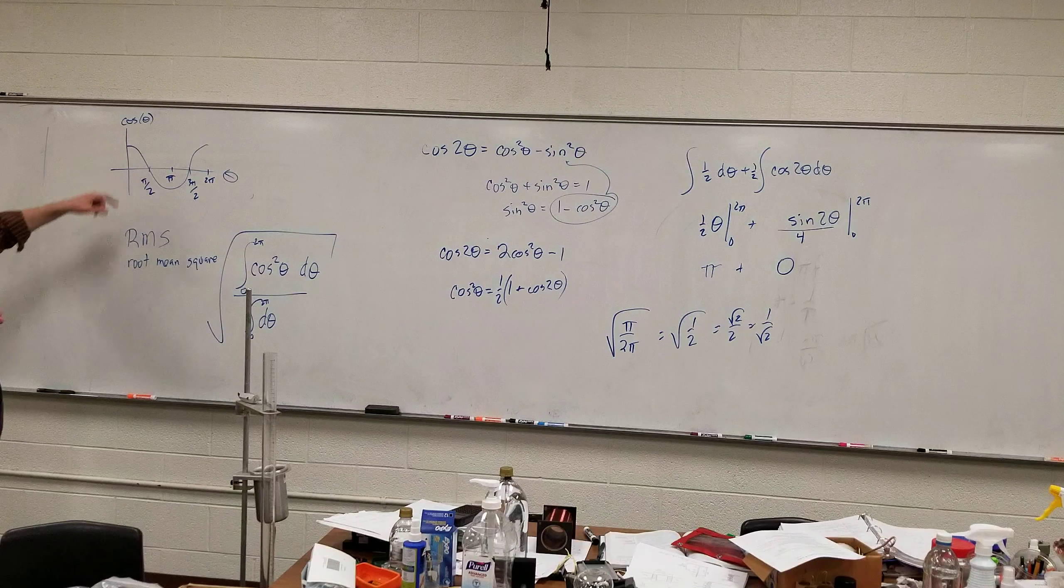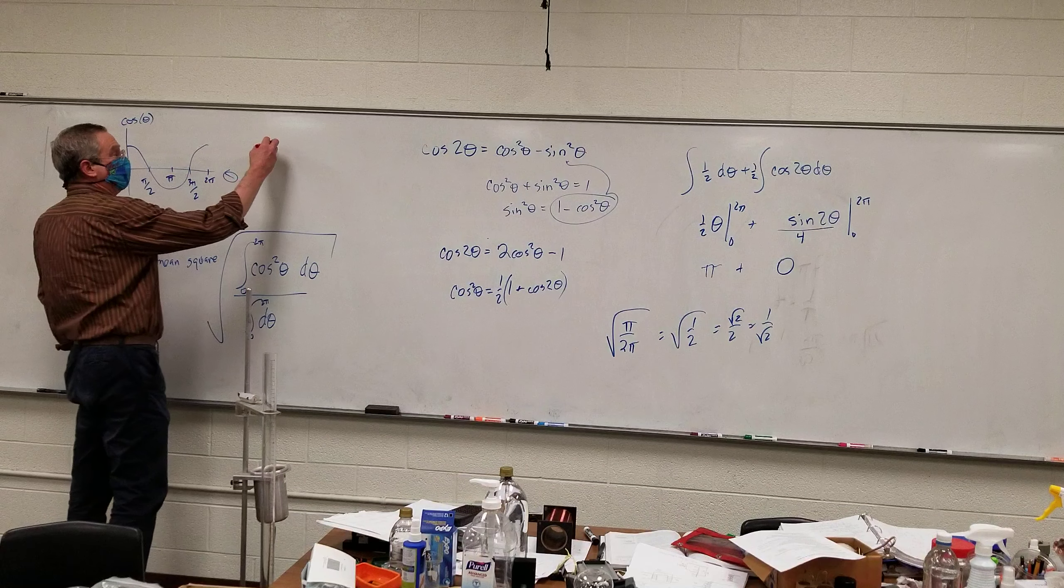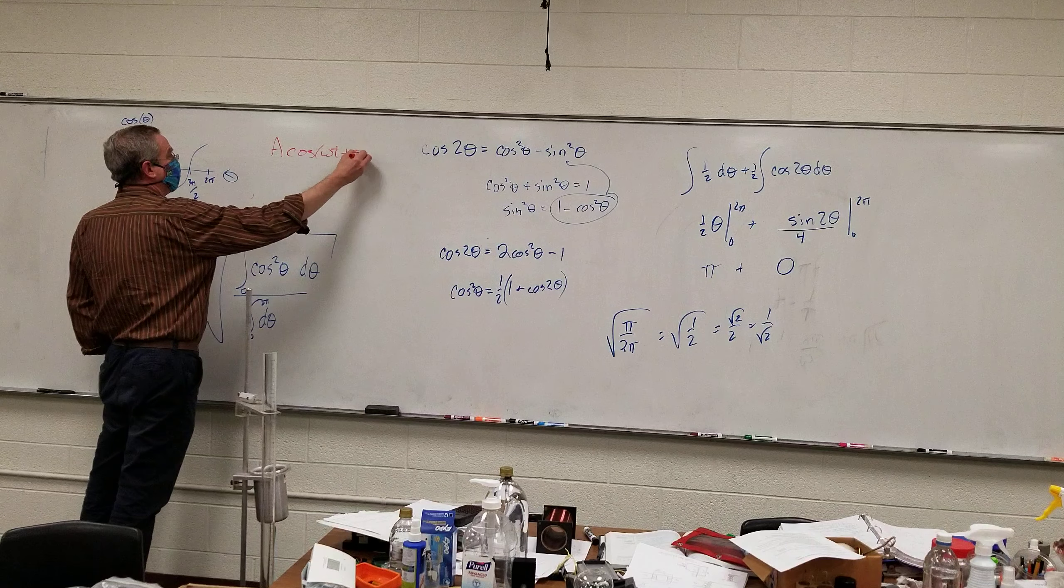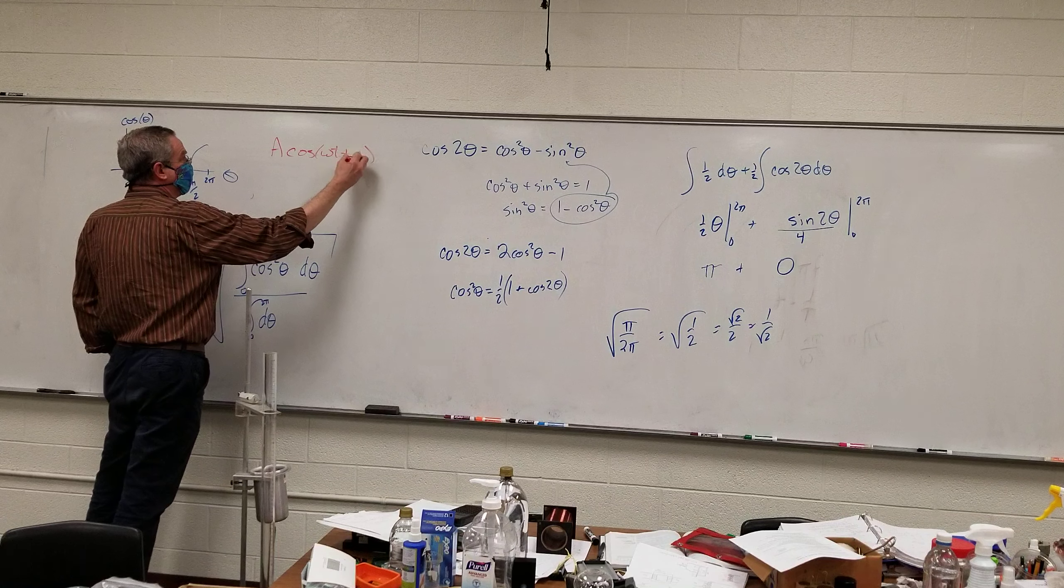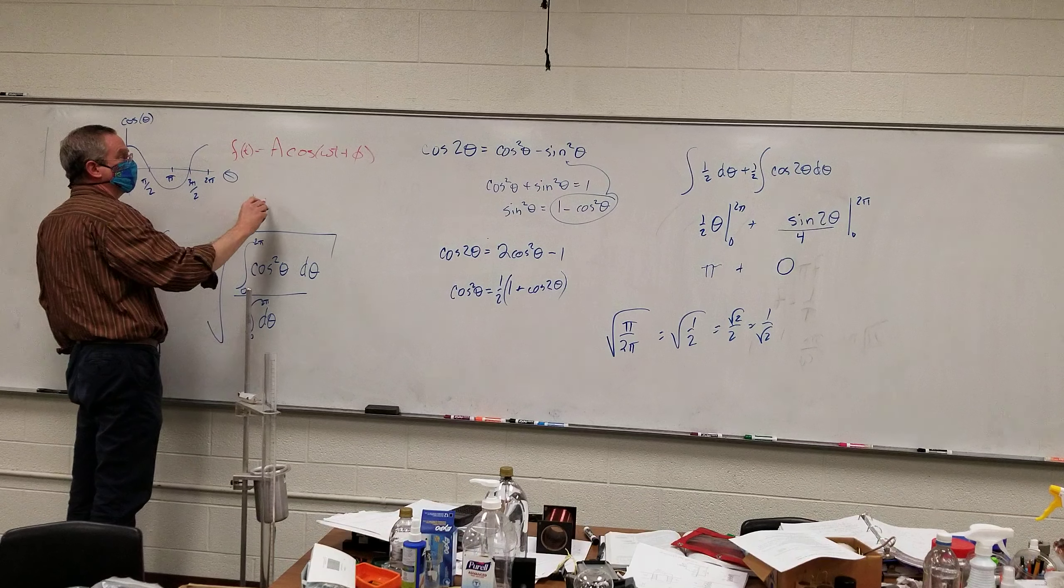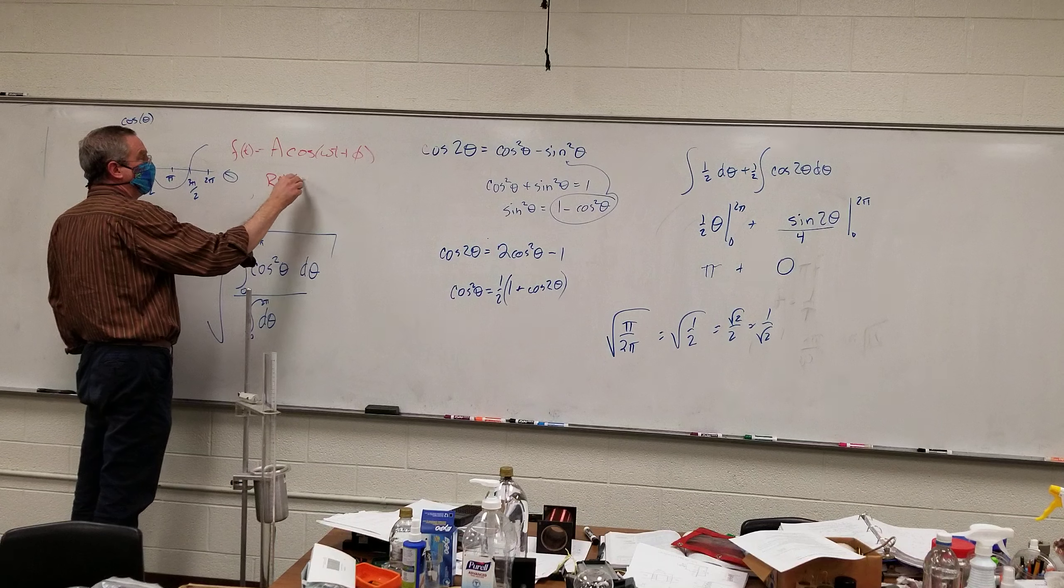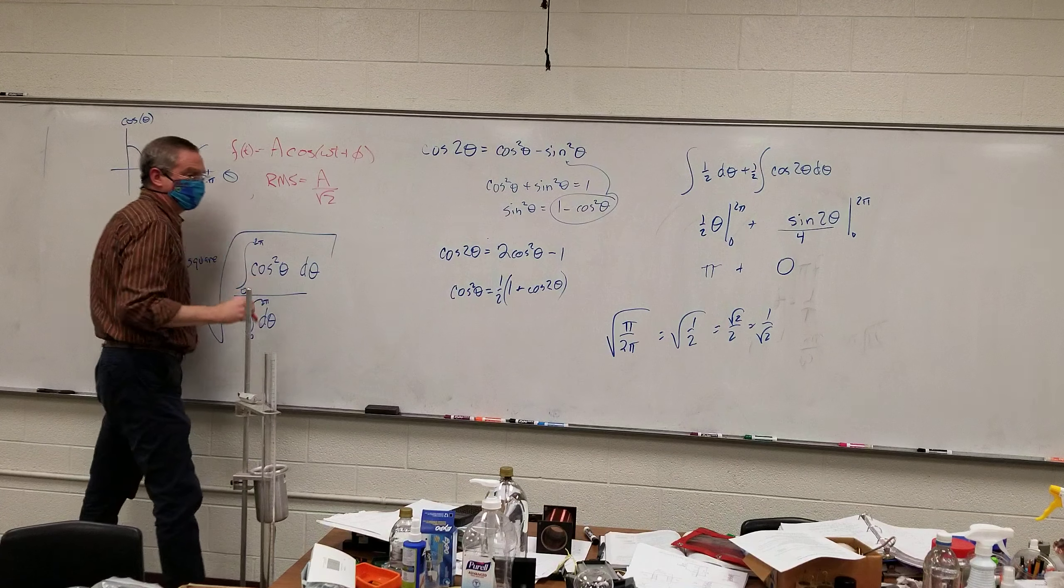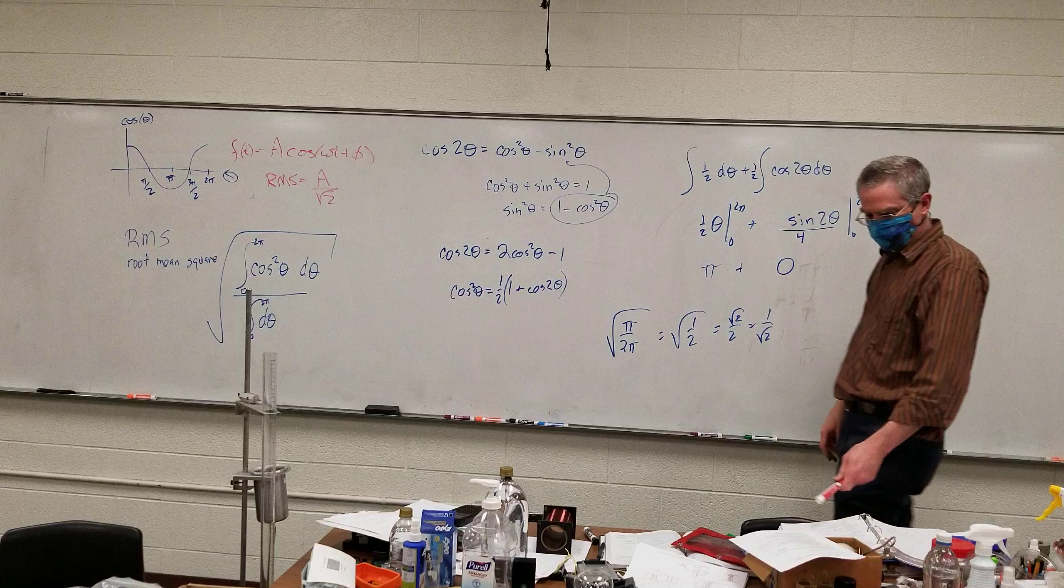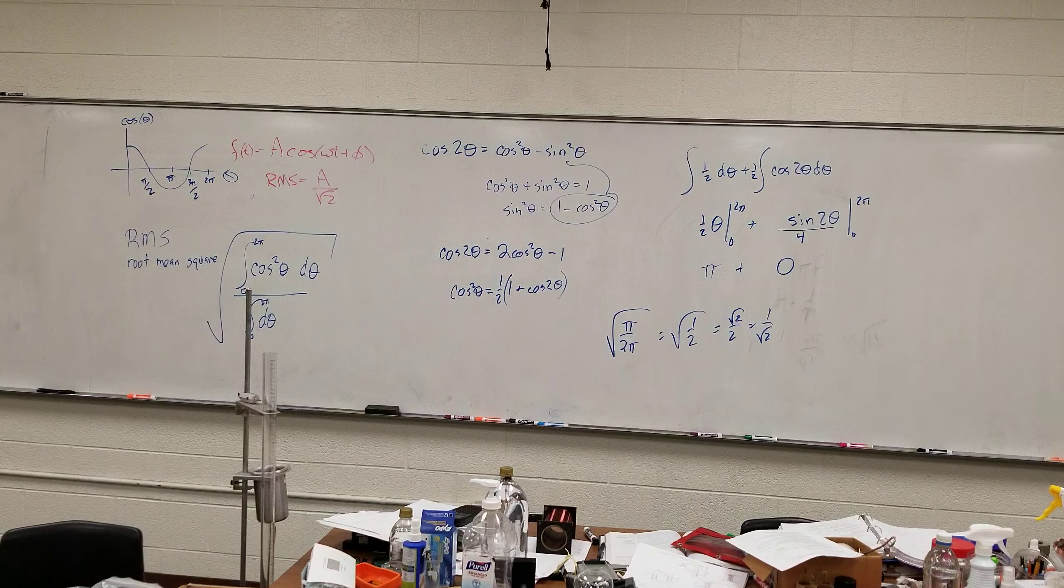In this case, our amplitude is one. If our amplitude were something else, we just stick that in front, we just multiply by it. So if I have some function, A cosine of omega T plus theta, or let's make it phi out of tradition. So if some function with respect to time of this, the average value, or the RMS value, would be the amplitude divided by the square root of two.